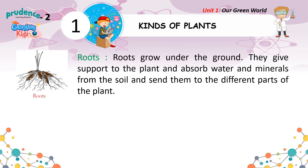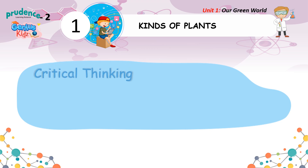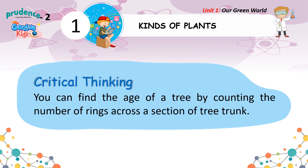Roots grow under the ground. They give support to the plant and absorb water and minerals from the soil and send them to the different parts of the plant. Stem: It is the main body of a plant. It helps the plant to stand straight. It bears leaves, branches, flowers and fruits. It grows above the ground and carries water and food to all other parts of the plant. Critical Thinking: You can find the age of a tree by counting the number of rings across a section of tree trunk.